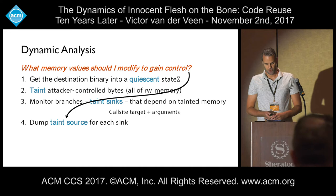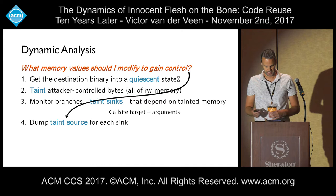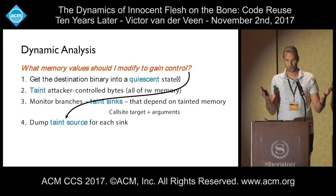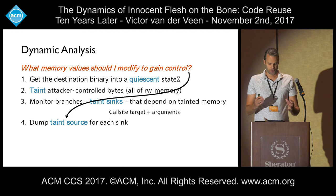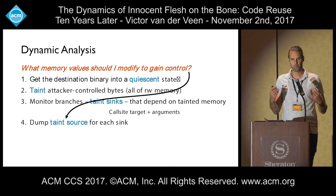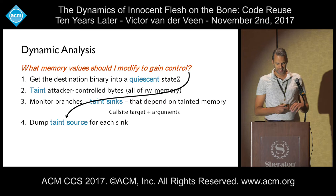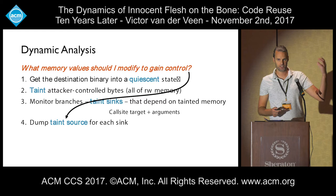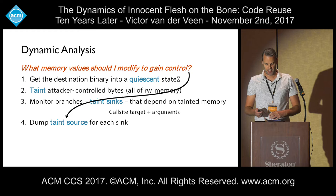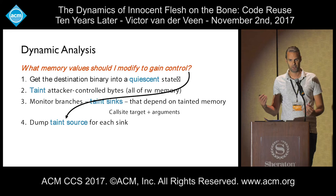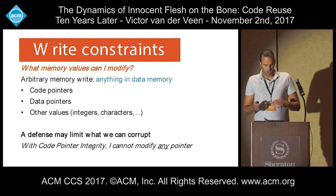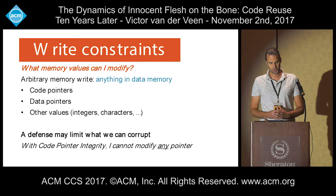With dynamic analysis, how do we figure out what memory values to modify to gain control? A couple of steps: we start by getting the binary into a certain quiescent state where the binary is stable — not doing much from the attacker's perspective. We then taint all the memory the attacker can control, monitor branches, and identify taint sinks that depend on the tainted memory. This gives us call site targets and arguments. For each sink, we dump what memory value tainted that specific call site. This answers the question the attacker is asking: what memory values do I have to modify to change what is happening in the binary? With this in place, we can model many different code-reuse defenses into one system.